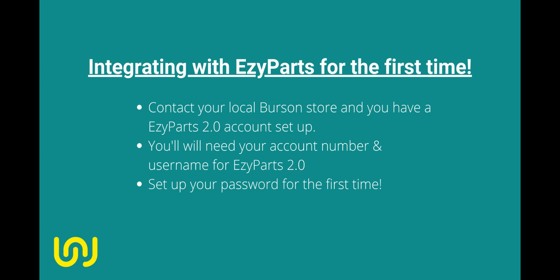If you are integrating Workshop Software with Easy Parts for the first time, firstly you'll need to contact your local Burson store to make sure you have an account set up on Easy Parts 2.0. If you haven't, they will be able to get this set up for you. You will be emailed your new account number and username, and provided a link to set up your password for the first time.